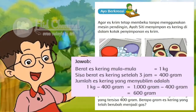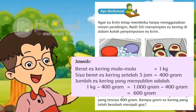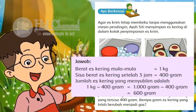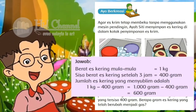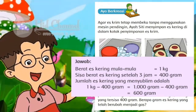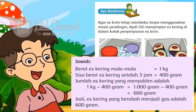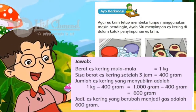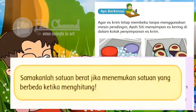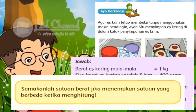Maka 1 kg dikurangi 400 gram. Kita ubah semuanya ke dalam bentuk gram. 1 kg sama dengan 1000 gram, dikurangi 400 gram, maka hasilnya adalah 600 gram. Sehingga, es krim yang berubah menjadi gas adalah 600 gram. Kuncinya, samakanlah satuan berat jika menemukan satuan yang berbeda ketika menghitung.